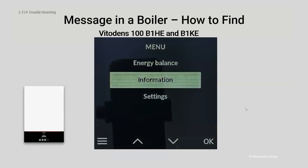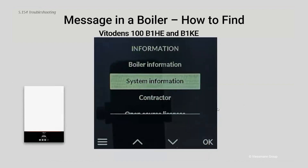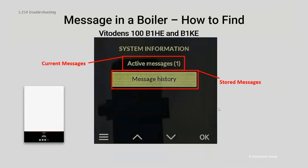Pushing the menu key is going to take us into the main menu. Scroll with the down arrow key to see 'information' highlighted, then push the OK button. From there you'll have different snippets of information — go to 'system information,' highlight it, and push OK. From here you have 'active messages.' If there's something causing that boiler to not work as you'd anticipate, you'll see an active message there — with a bracket showing one or multiple messages. You can highlight that active message, push OK, and see what that message is. Or scroll down to 'message history.'